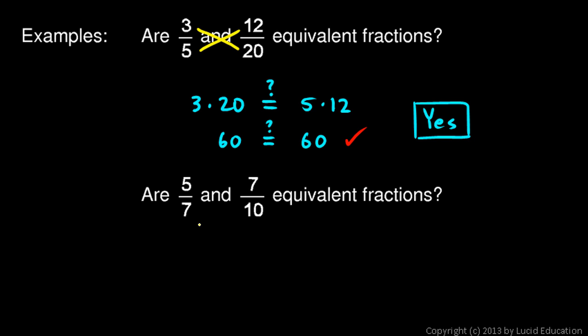Now, let's look at this one. Are five-sevenths and seven-tenths equivalent fractions? Well, again, we cross-multiply. Five times ten. Is that equal to seven times seven? Well, five times ten is fifty. And is that equal to seven times seven? Forty-nine. No, it's not. They're close, but they're not exactly the same. So, they are not equivalent fractions.